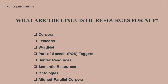In simple words, lexicons are dictionaries or word lists containing information about individual words, including their meanings, parts of speech, and sometimes additional linguistic features such as pronunciation, synonyms, antonyms, and morphological information. Lexicons are used for tasks such as word sense disambiguation, sentiment analysis, and named entity recognition.